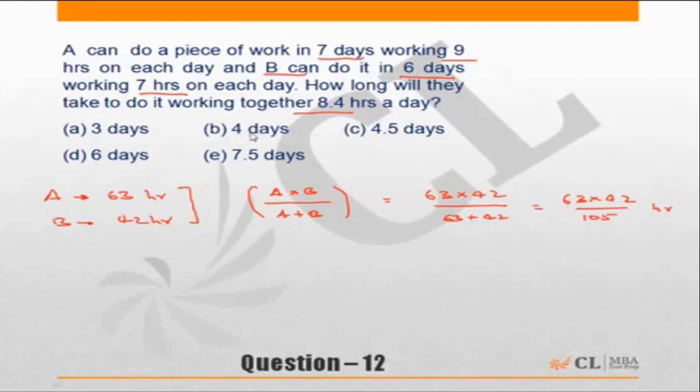Which is equal to 63 into 42 upon 105. So in how many days will that mean? Obviously the total time taken by A plus B should be divided by 8.4, so it is 63 into 42 upon 105 into 1 upon 8.4.